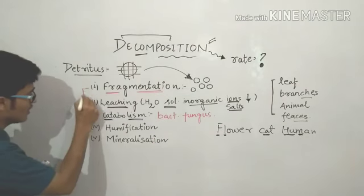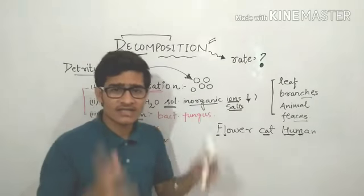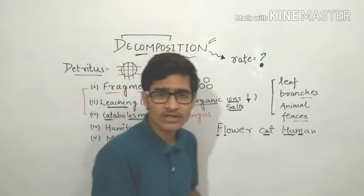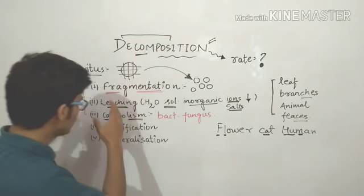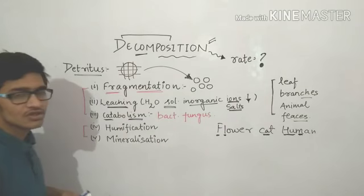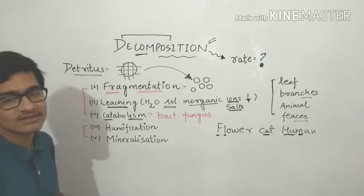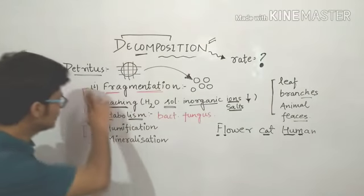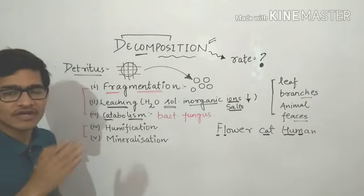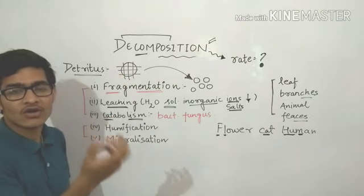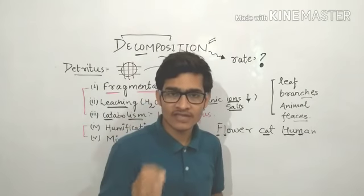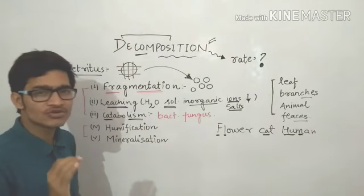All three processes — fragmentation, leaching, and catabolism — take place simultaneously. However, humification and mineralization take place after these three are complete. So the first three work simultaneously, and humification and mineralization start only after the material has been totally broken down. Fragmentation is physical breakdown into fragments, leaching is the precipitation of water-soluble ions, and catabolism is the enzyme-mediated breakdown by bacteria and fungi.